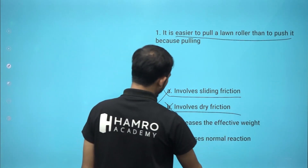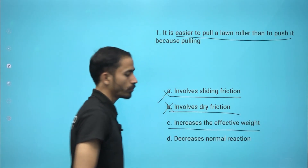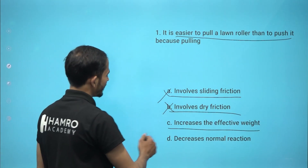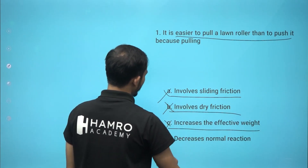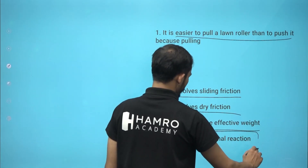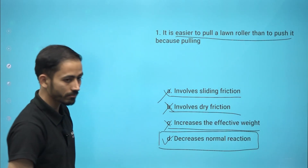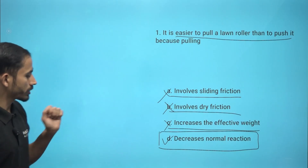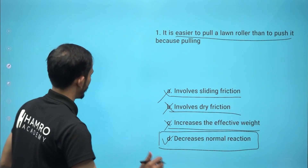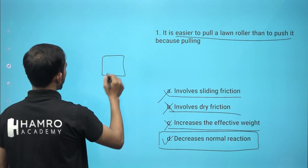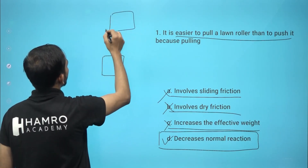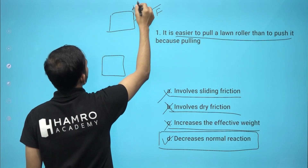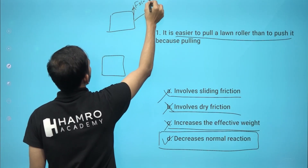When you pull, it increases the effective weight. Effective weight increases. The normal reaction can be decreased. Normal reaction can be used to explain this difference between pulling and pushing.